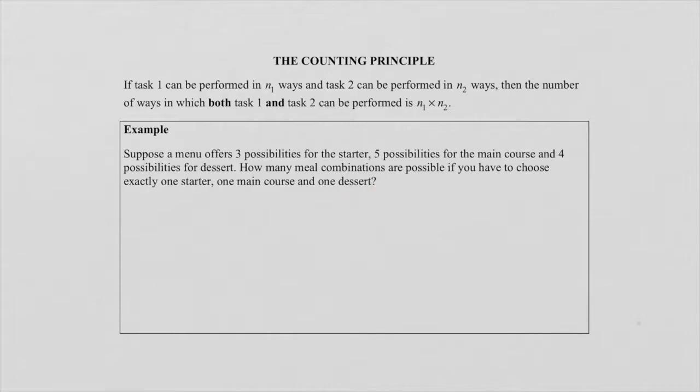Let's just look at this again. For starter, there are three possibilities. For a main course, there are five possibilities, and for a dessert, there are four possibilities. So it is quite clear that we have three tasks that we need to do. We represent these tasks with a little line.